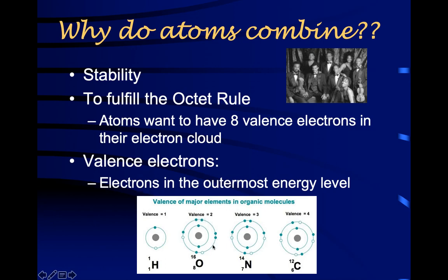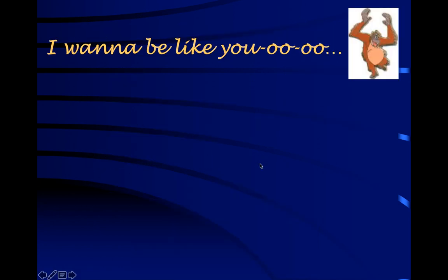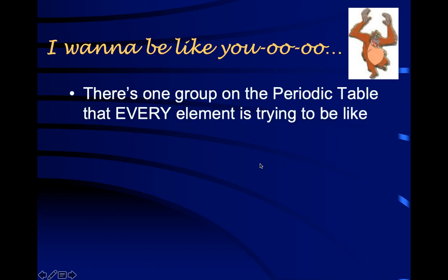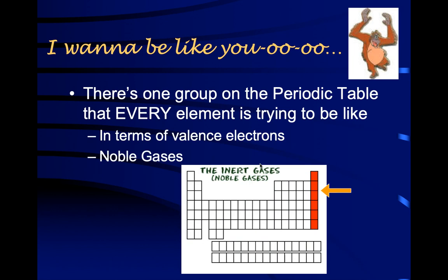If you have eight electrons in that valence level, that makes the atom stable. There is one group on the periodic table that all other elements are trying to be like in terms of their valence electrons — they're not changing their identity, just copying the number of valence electrons. That's the noble gases, the far right column on the periodic table — not all gases, just these on the far right.